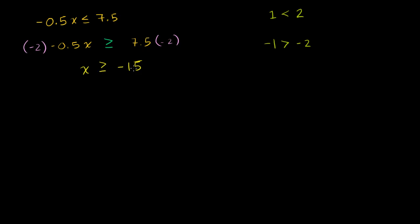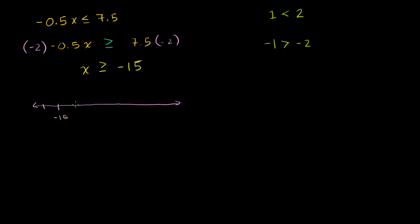Negative 2 times negative 0.5 is just 1, so you get x is greater than or equal to 7.5 times negative 2, which is negative 15. All x's larger than negative 15 will satisfy this inequality. I challenge you to try it — for example, 0 will work; 0 is greater than negative 15. But try negative 16: negative 16 times 0.5 is 8, which is not less than 7.5. So the solution set is all x's greater than negative 15. Let me draw a number line here.